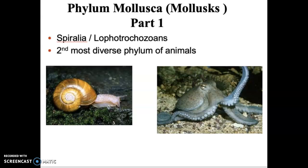Make sure you understand: what are the features at the protostome grouping, what are the features at the Spiralia grouping, and then what are the features of the Lophotrochozoans?